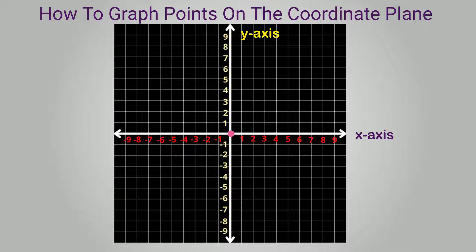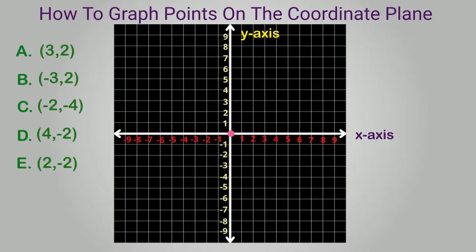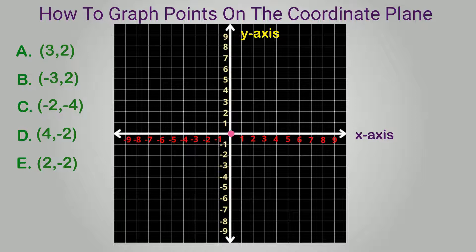Let's look at this coordinate plane. Here you will see five coordinates, or ordered pairs, that we can graph together. Let's look at the first one.